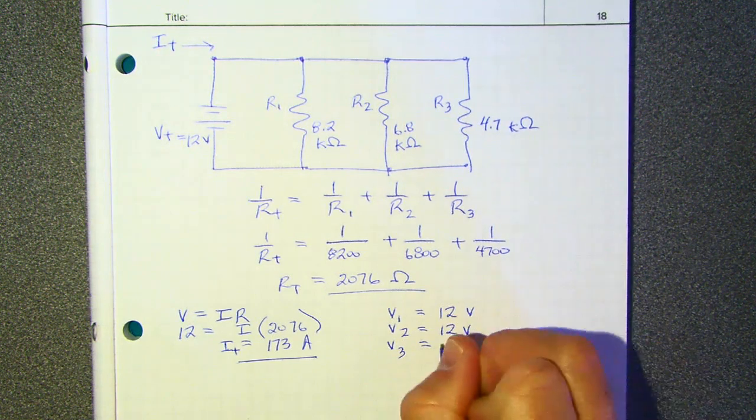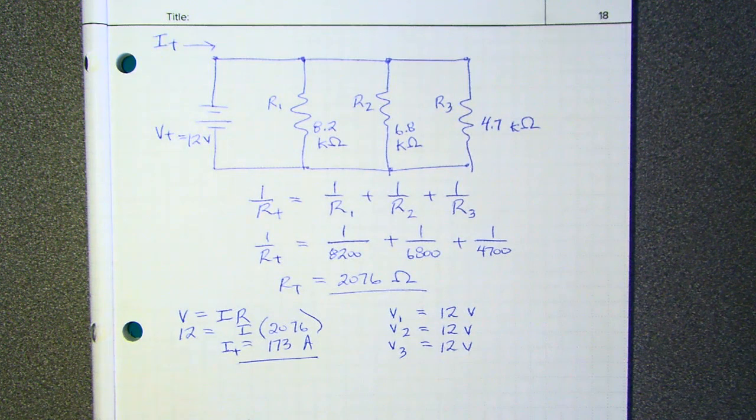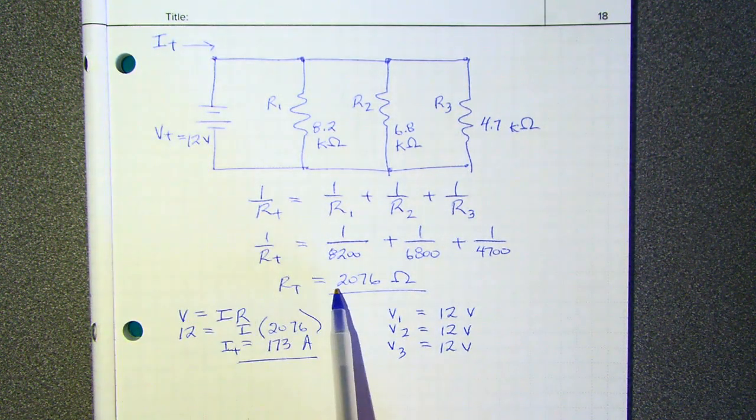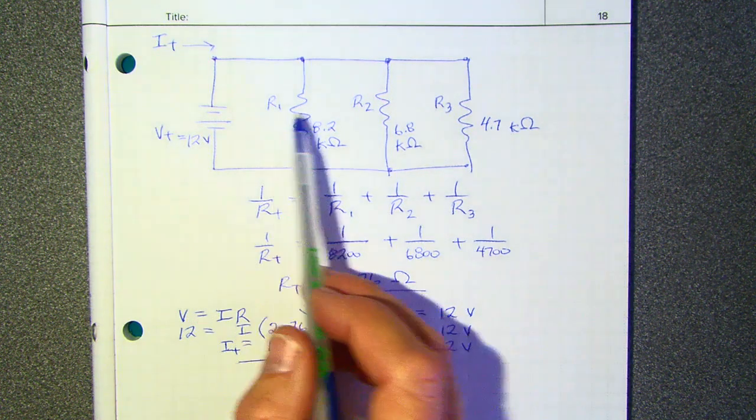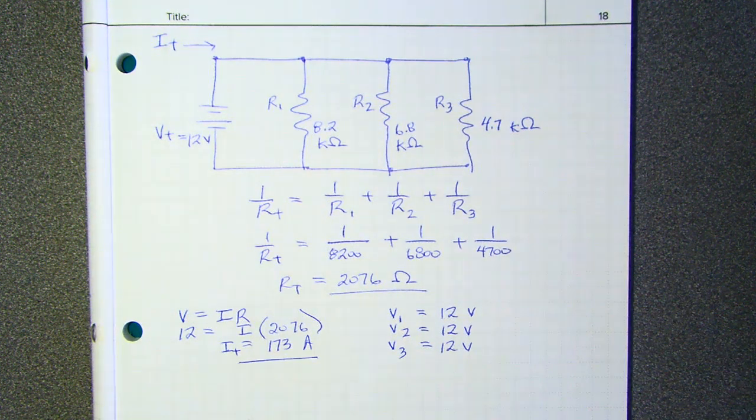What is it, 12 volts? I'm getting nervous again. Okay, so it's 12 volts in each of the resistors. So wait a minute. We know current, voltage, and total resistance. That's three things. We know resistance, resistance, resistance. That's three more things. We know voltage, voltage, and voltage. That's three more things.